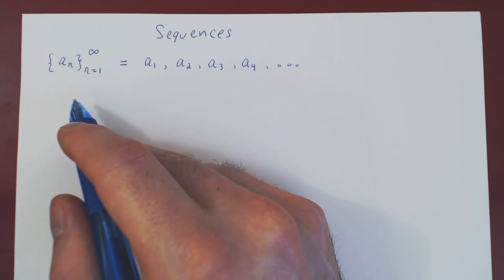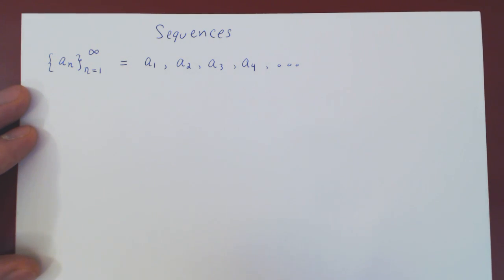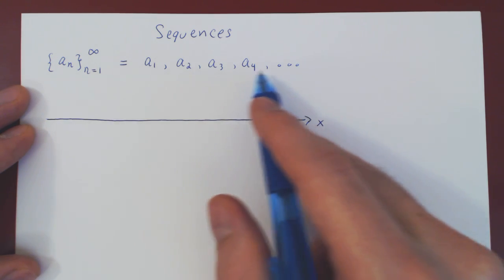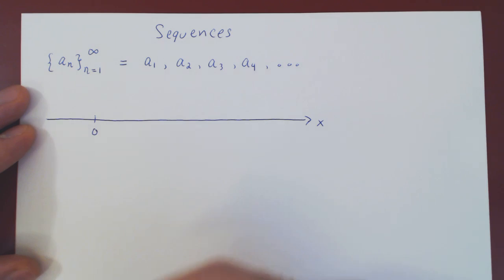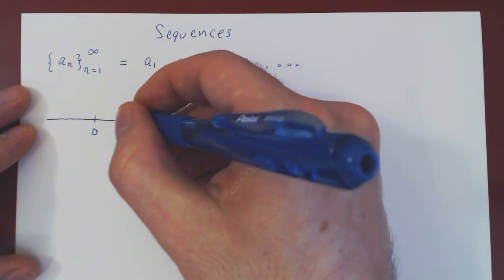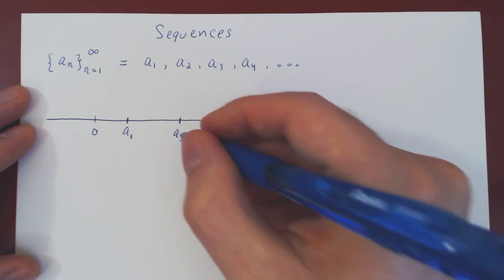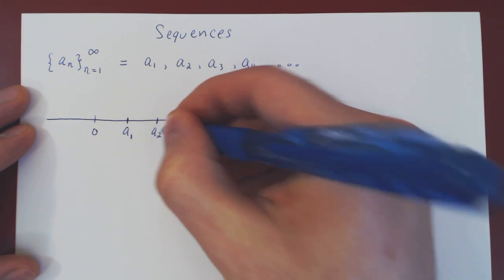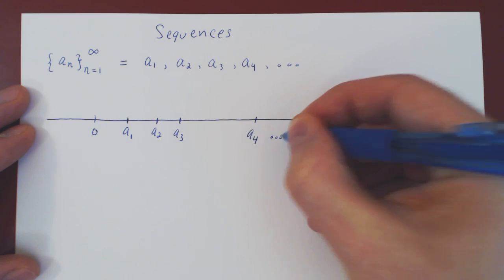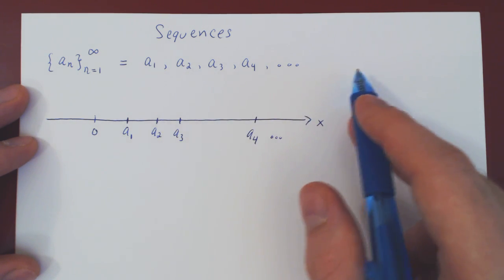There are two ways you can visualize a sequence. When you view it as an infinite list of real numbers, you can visualize a sequence along the real axis. For example, suppose the terms are positive and increasing. Then a_1 could be here, a_2 a little bigger, a_3 a little bigger than a_2, a_4 much bigger than a_3, and so forth — you place every term of your sequence along the real line.